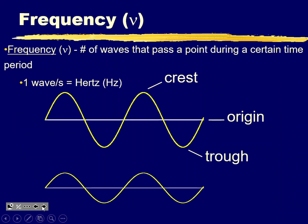Frequency is the number of waves that pass through a point in a certain period. Frequency is measured in hertz — one wave per second, or waves per second. You can write hertz, or write it as one over second, or as s to the minus one, since that means per second.